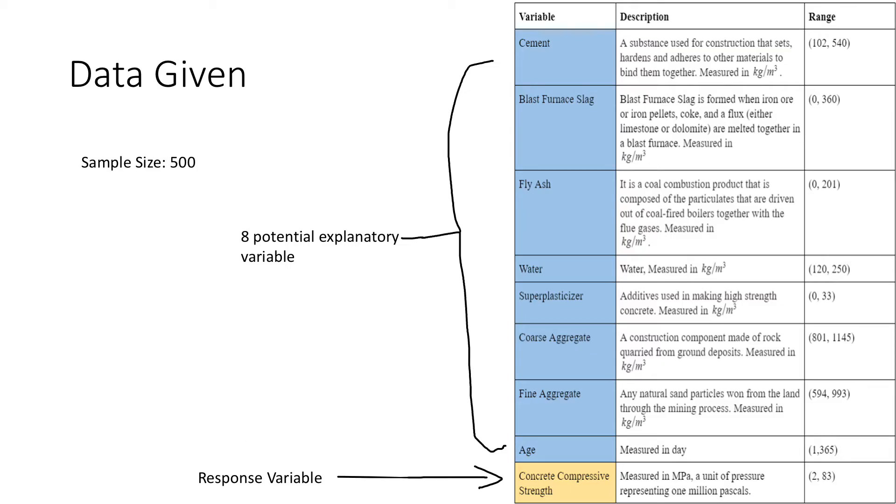All right, so the data we're dealing with has a sample size of 500 observations with eight potential explanatory variables starting from cement, which is the binding agent. All the following variables are measured in kilograms per meter cubed.